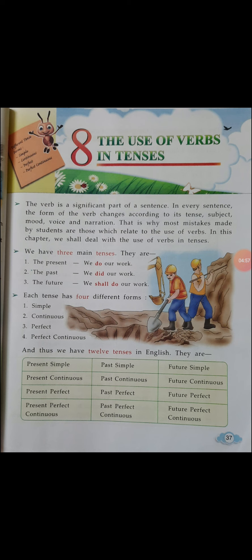Now the future tense: 'We shall do our work.' So 'do' changed to 'did' in past tense, and now to 'shall do' in future tense. Present: 'We do our work.' Past: 'We did our work.' Future: 'We shall do our work.' You must have noticed that 'do' has changed into 'did' and 'shall do' — this is the use of verb in tense.